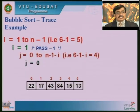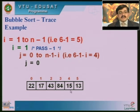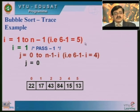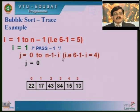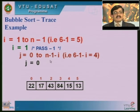Let us trace this program with the list: 22, 17, 43, 84, 15, 13 — six elements. We have n−1 = 5 passes. When i = 1, j runs from 0 to n−1−i = 4, so the valid values for j are 0, 1, 2, 3, and 4. When j becomes 5 (greater than 4), we exit the j loop and move to the next pass.